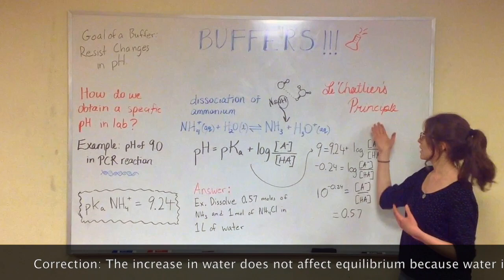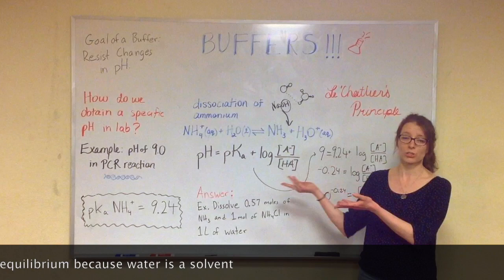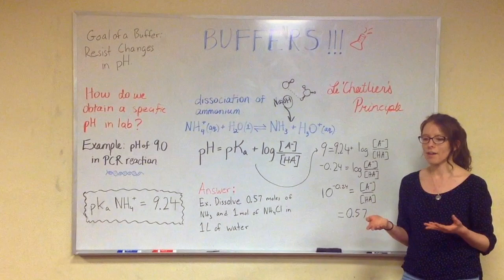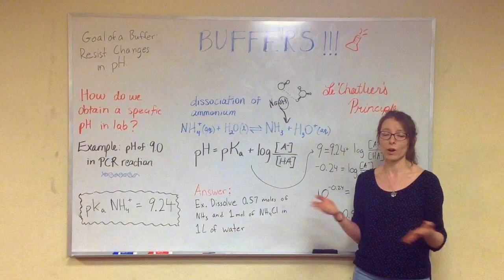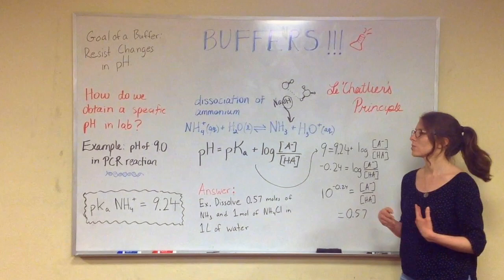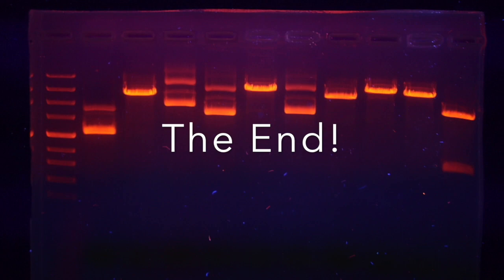And Le Chatelier's principle tells us that the reaction is going to shift to the right in order to compensate for that loss of concentration. And as a result of the addition of this strong base, the pH will go down, but it will not change as drastically. If this were not a buffer, it would change more. But because it is a buffer, we can control the change in pH a little more. So this allows us to get closer to 8.4 in this buffer. Thank you.